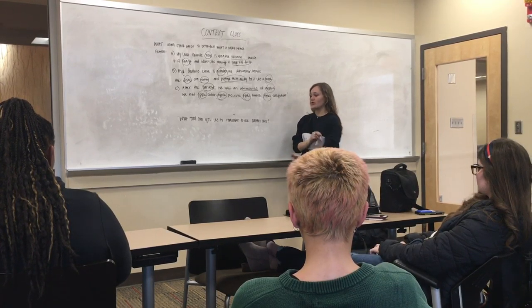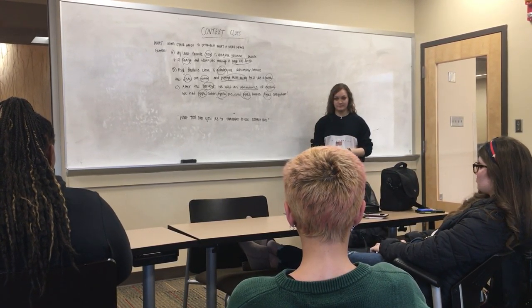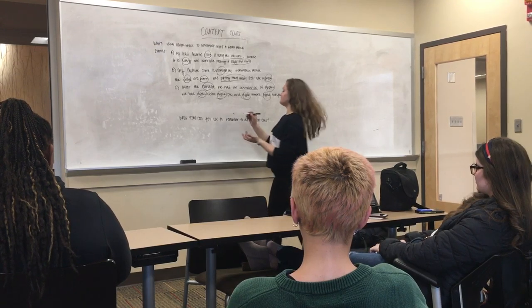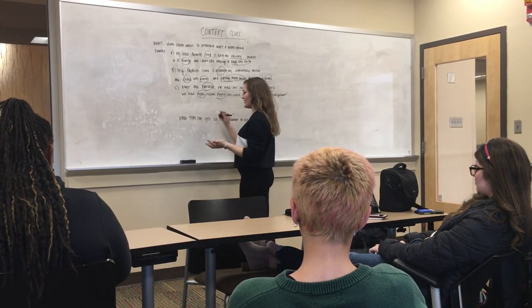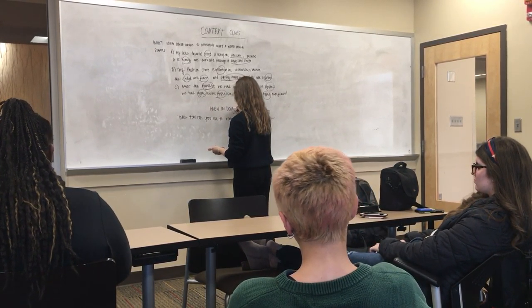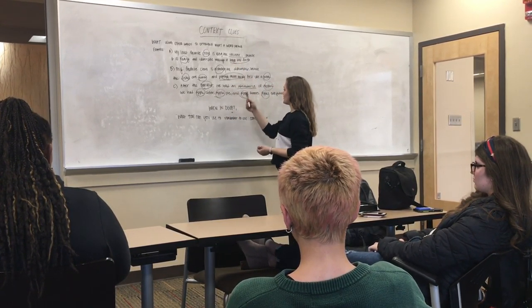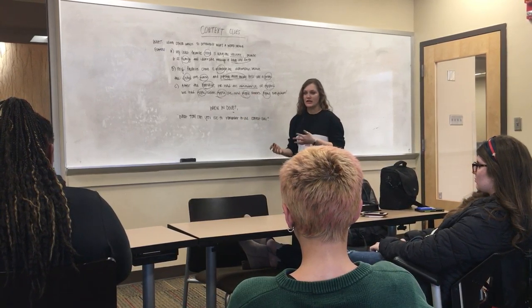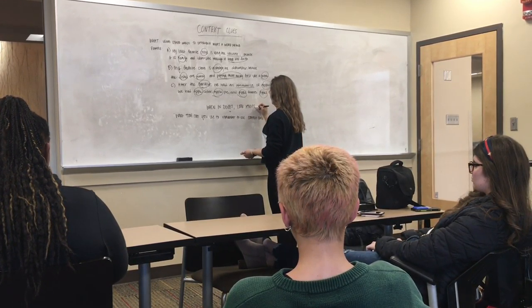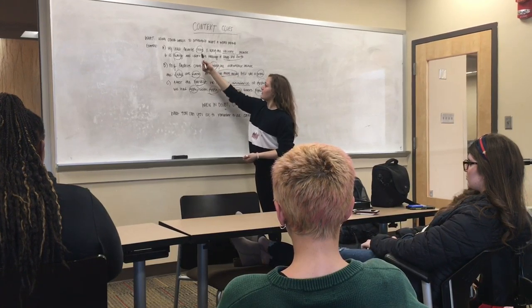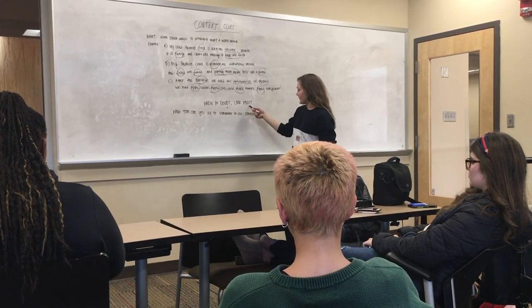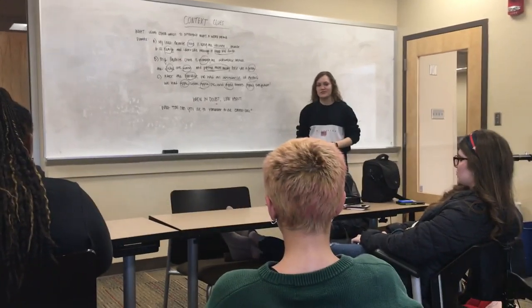Good job. What tool can you guys use to remember to use context clues when you're reading? A chant. So a phrase to stay in your life, something to remind yourself: when in doubt — like with a word such as vacuum, dishwasher, or abundance, when you don't know what something means and you don't want to look it up — you would look about. You would look at words that you do know, circle them, and use them to determine the definition. So when in doubt, look about — that is how you use context clues in literature.